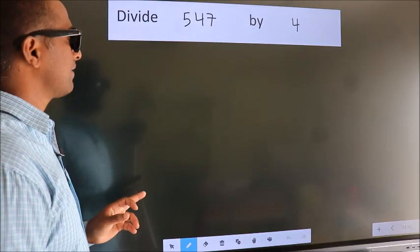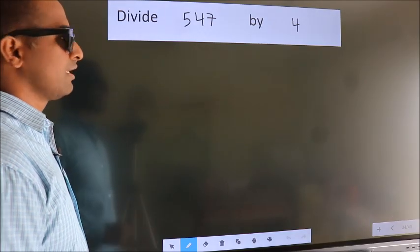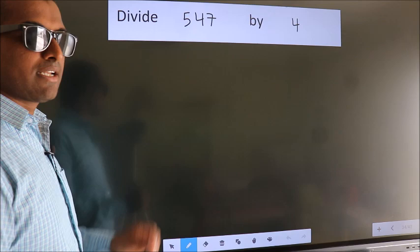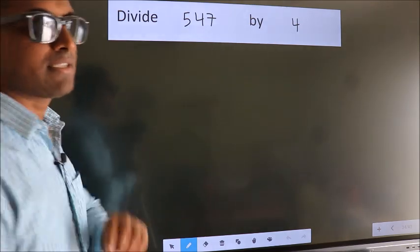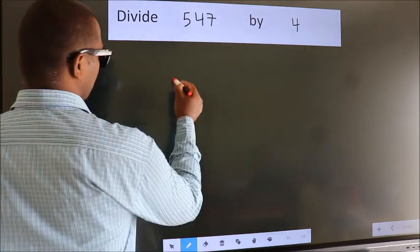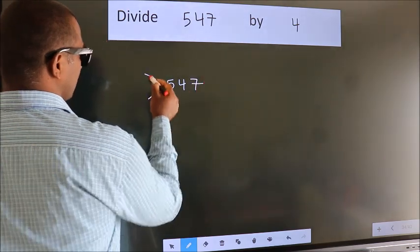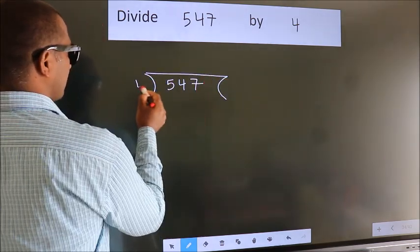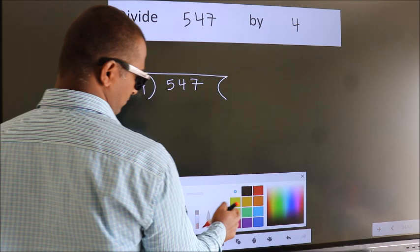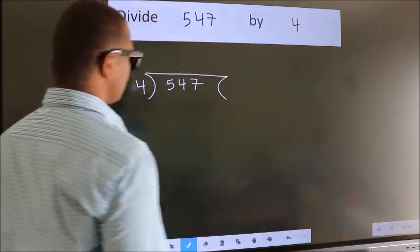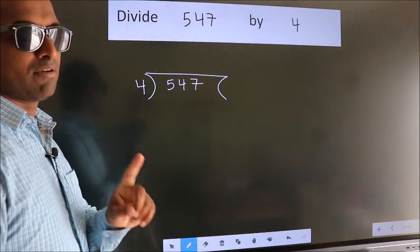Divide 547 by 4. To do this division, we should frame it in this way. 547 here, 4 here. This is your step 1.